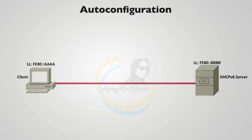If we have lots of IPv6 speaking devices, we probably don't want to have to visit each device and manually configure an IPv6 IP address on that device. The great news is we have the option of doing auto configuration, and there are a couple of approaches to this automatic configuration of an IP address on a client.